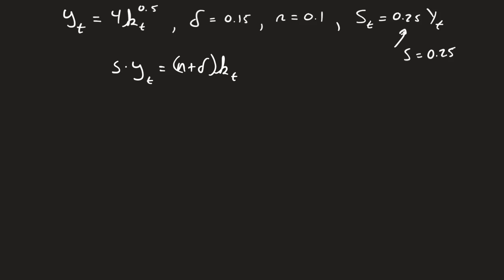Now, what we can do is I drew this out on purpose with the t. Now that we are in steady state, we can actually get rid of that. So we have our steady state condition where we can solve for k. What we have to do here then is we have to plug in everything, so my s is 0.25